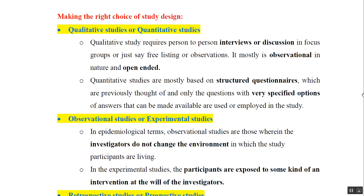The second classification is observational studies versus experimental studies. In observational studies, the investigator observes but does not change the environment in which the study participants are living. In contrast, in experimental studies, participants are exposed to some kind of intervention imposed at the will of the investigator.